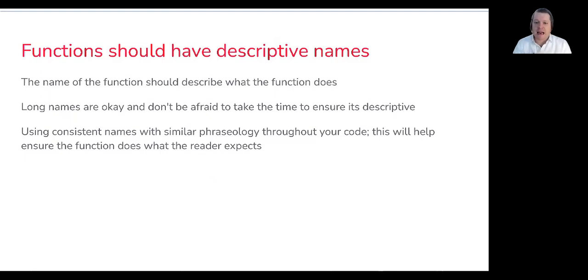It's very clear what's happening and you're not leaving someone who might come to maintain your code at a later time guessing what's actually occurring. Using consistent names is also going to be important with similar phraseology throughout your code. This will help ensure that the function does what the reader is expected. So if you have a function that sets a value, use the same phraseology throughout your code. If you have something that's getting a value, use similar phraseology throughout your code, don't mix stuff up, be predictable and use consistent naming throughout your applications.